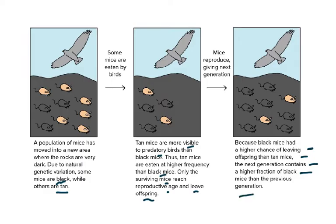This is an example of natural selection. First, there had to be variation — black and tan mice. They move into an area where the rocks are very dark, so some are at a disadvantage and some are at an advantage. The dark ones are camouflaged so birds can't see them and won't eat them, while the tan ones are conspicuous and easily spotted, so birds eat them. We are left with more black mice, and the black mice will have more offspring — more and more black mice — so a higher fraction of black mice than the previous generation.